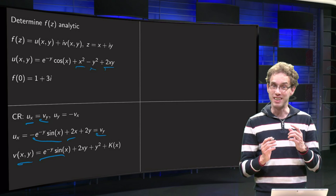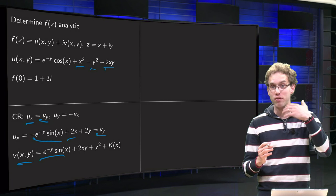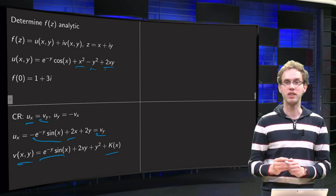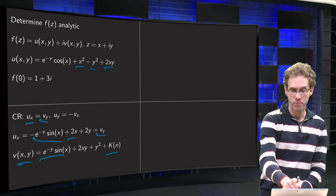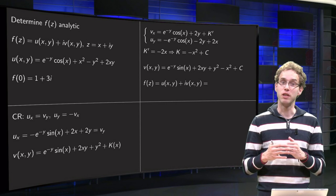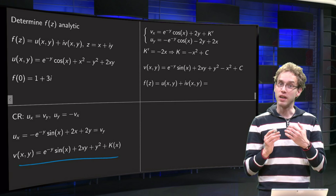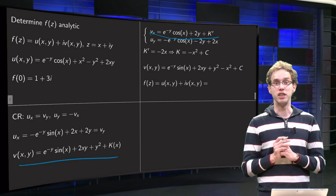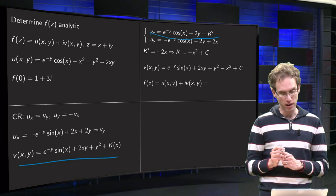Remember we integrated, so we have an integration constant k. That k can still depend on x, because we integrated with respect to y whilst keeping x constant. To determine k(x), we use the second Cauchy-Riemann equation: vx has to equal minus uy. We differentiate v with respect to x, getting cosine x times e to the power minus y plus 2y, while the y squared term vanishes since we differentiate with respect to x, plus k prime.